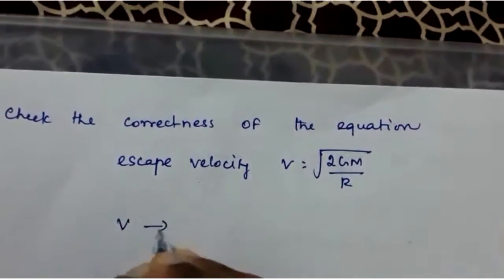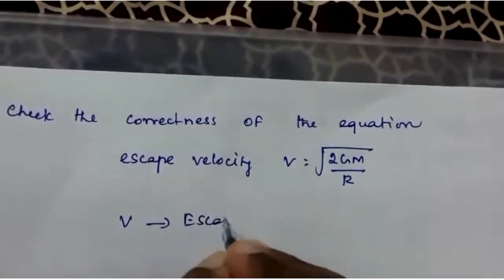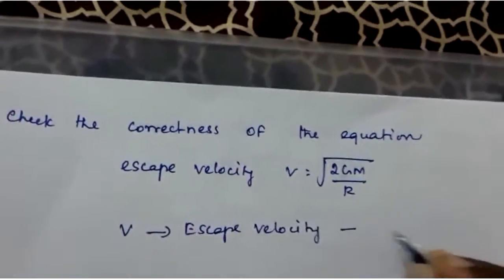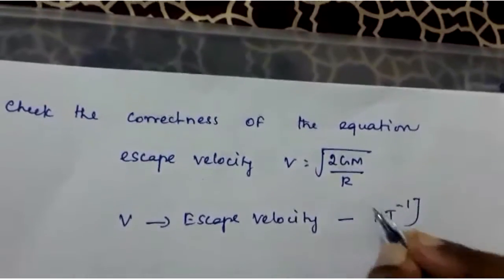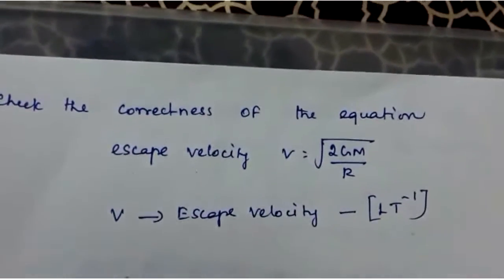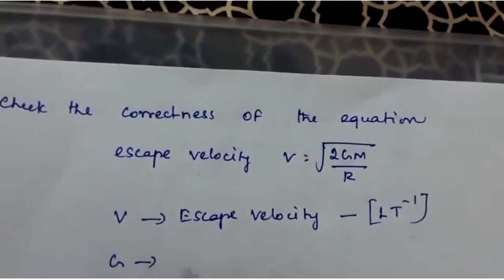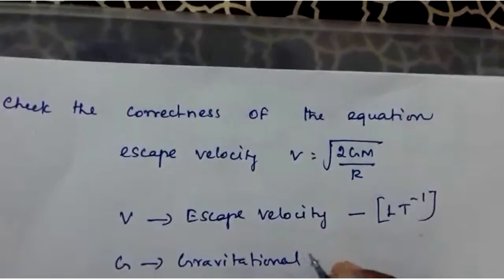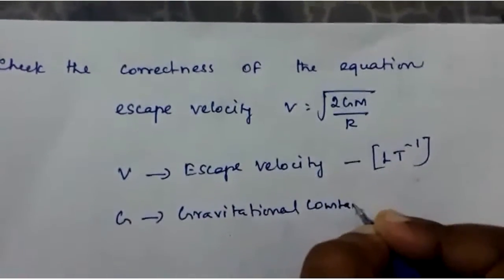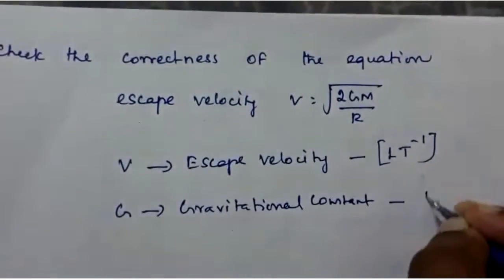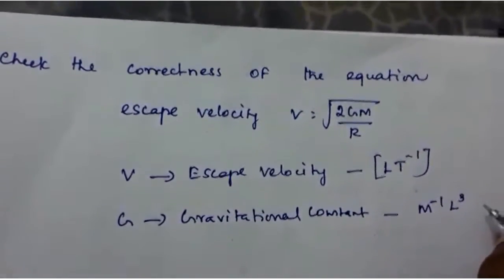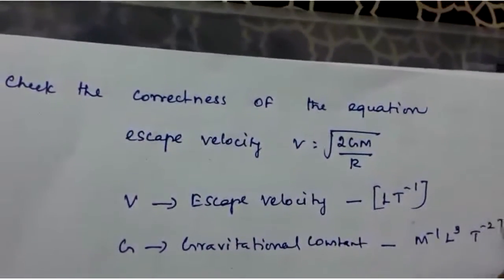Here V represents escape velocity. The dimension of escape velocity is the same as that of velocity. G represents gravitational constant. The dimensional formula for gravitational constant is M^-1 L^3 T^-2.